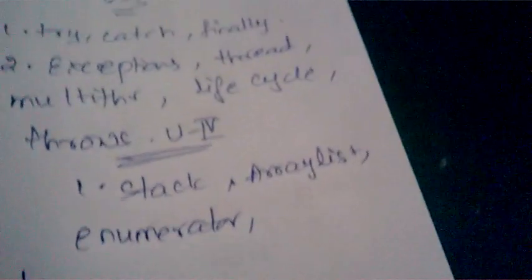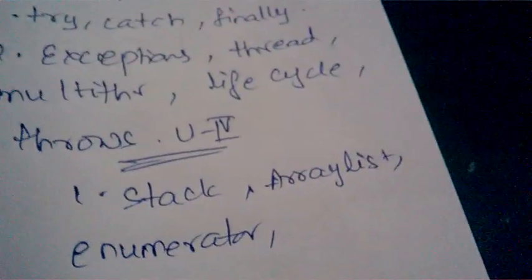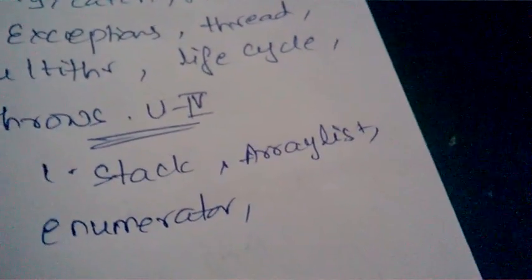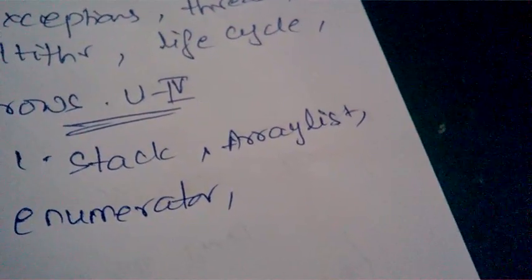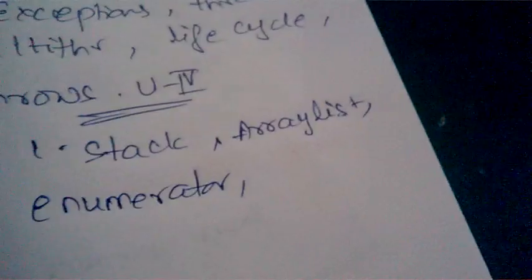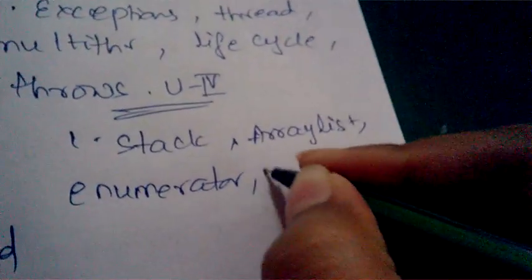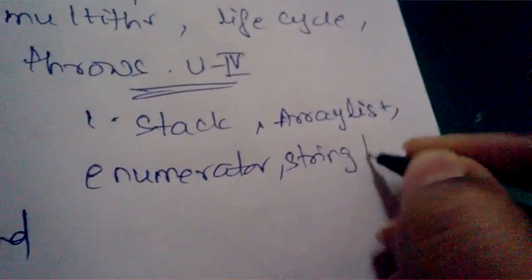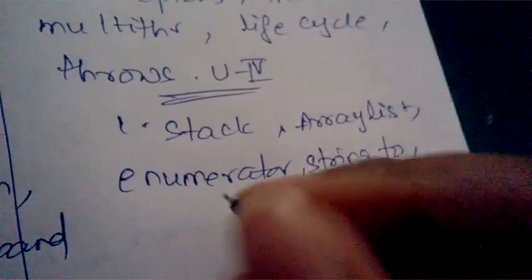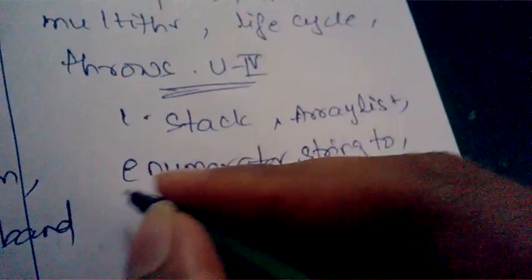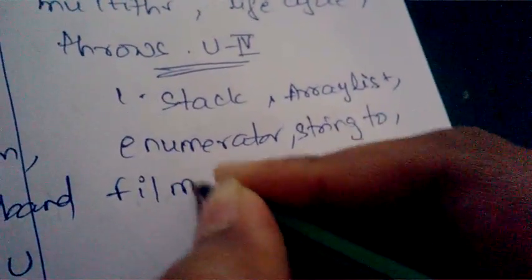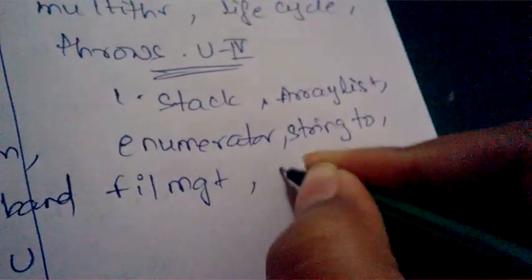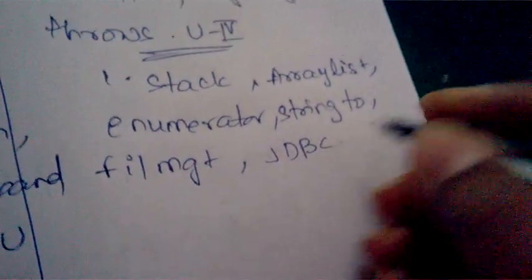In Unit Four: what is an enumerator, why do we use enumerator, and what is String Tokenizer — these are also important concepts.